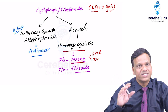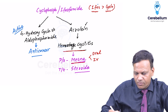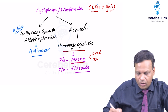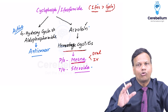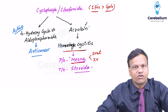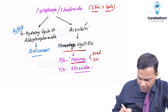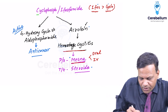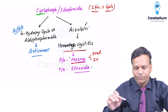Summary of hemorrhagic cystitis MCQs: which anti-cancer drugs cause it — Ifosfamide followed by cyclophosphamide; which compound causes it — acrolein; treatment — steroids; prevention — Mesna. Apart from this, cyclophosphamide can also cause pulmonary fibrosis.